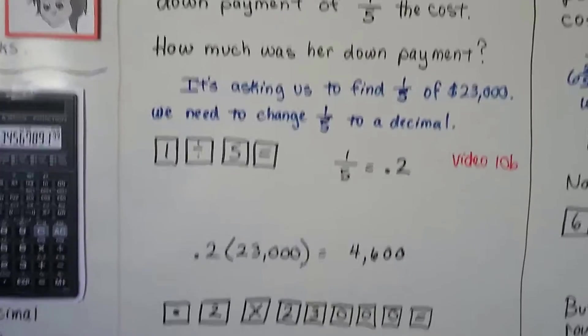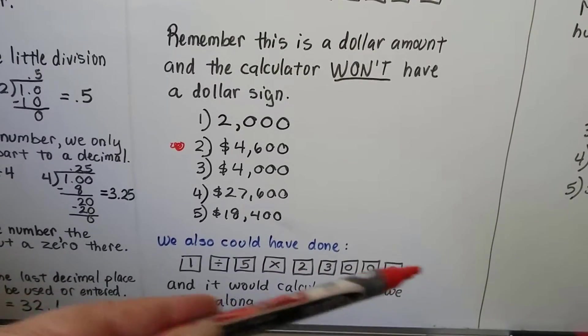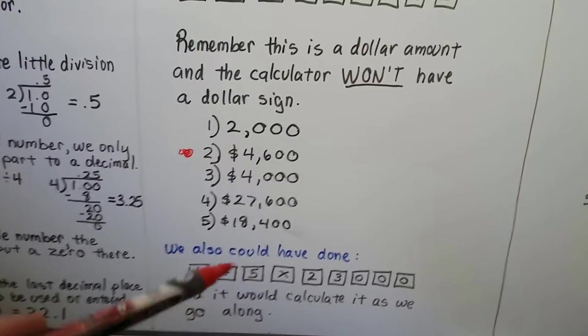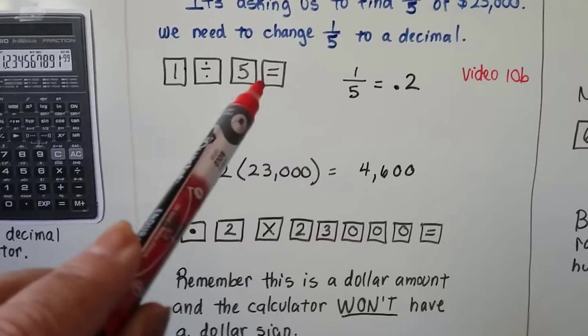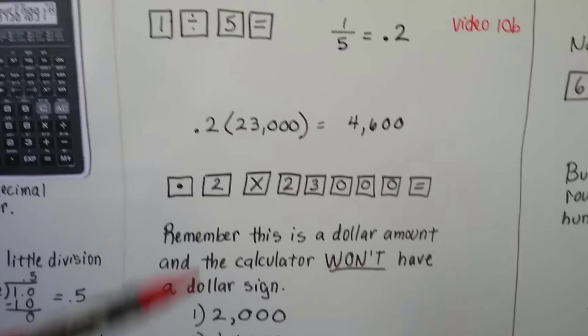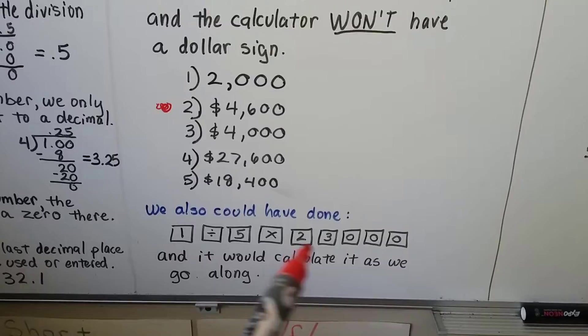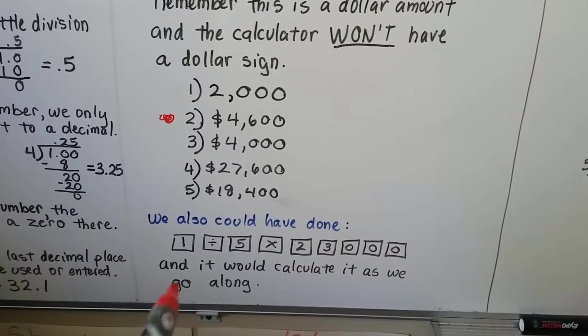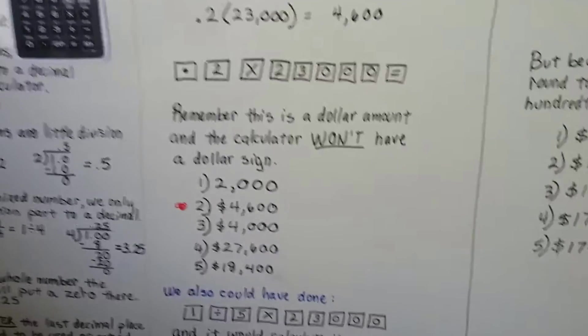So, because this is a fraction by itself, we could have just done it in one long calculation of entering the buttons and we didn't have to hit an equal sign after the 1 divided by 5 like I did here. You could do it that way and get the 0.2 and then do the 0.2 times this. But, because it's just one little one-fifth and not a mixed number, we could have just gone straight across like that, and it would just slowly calculate it as we entered it and give us the final answer of $4,600.